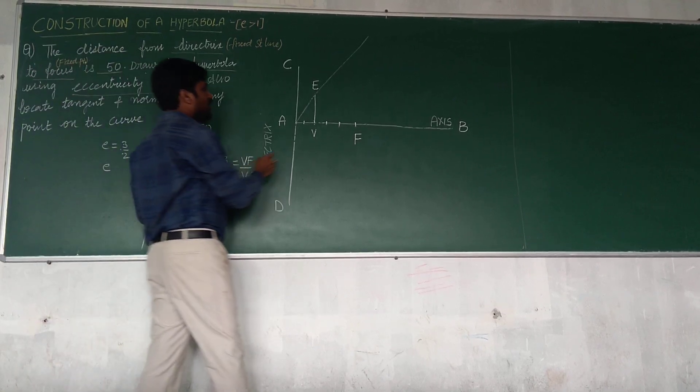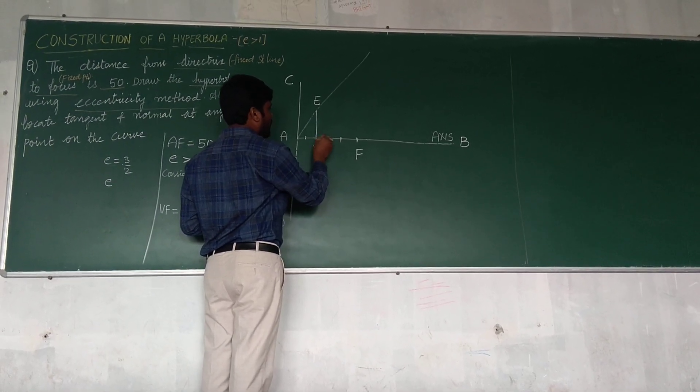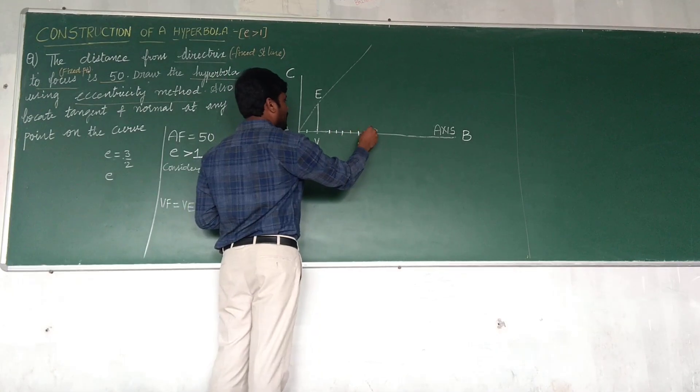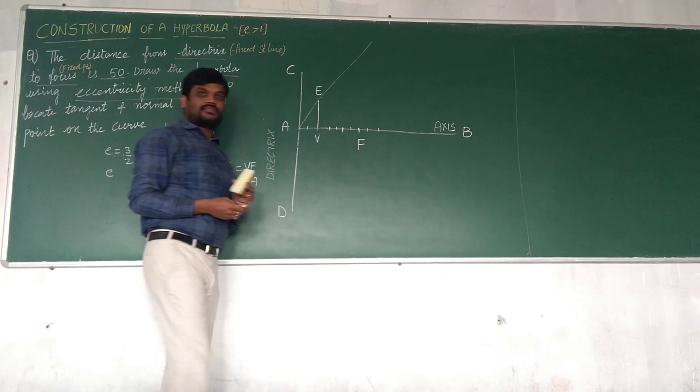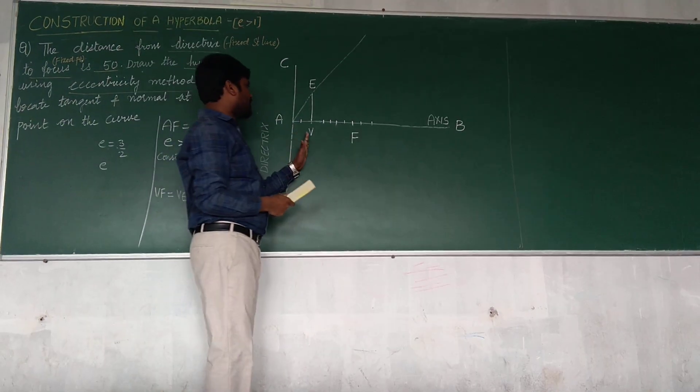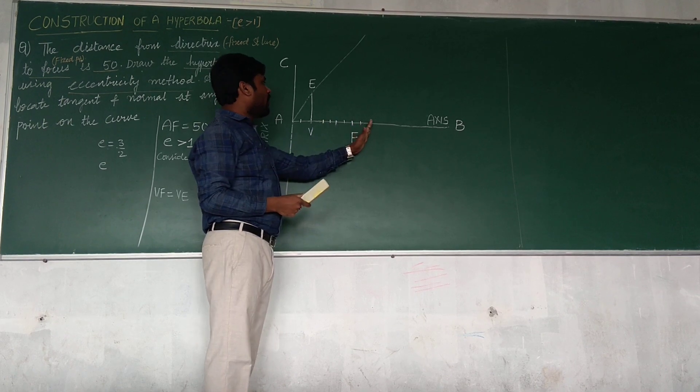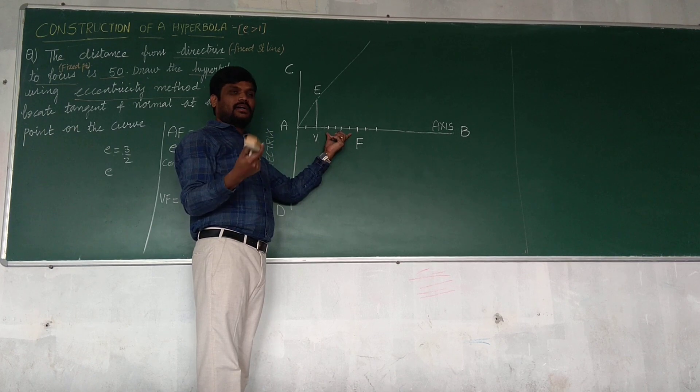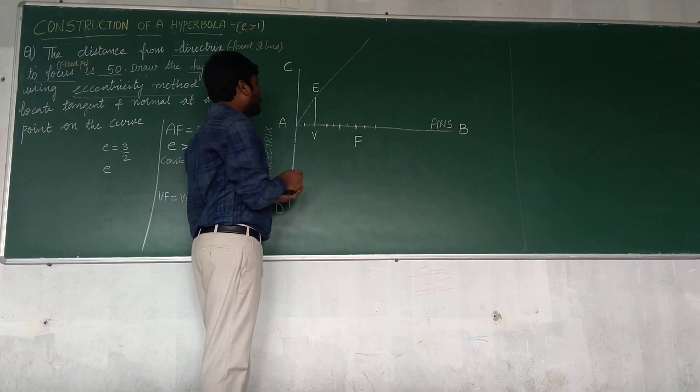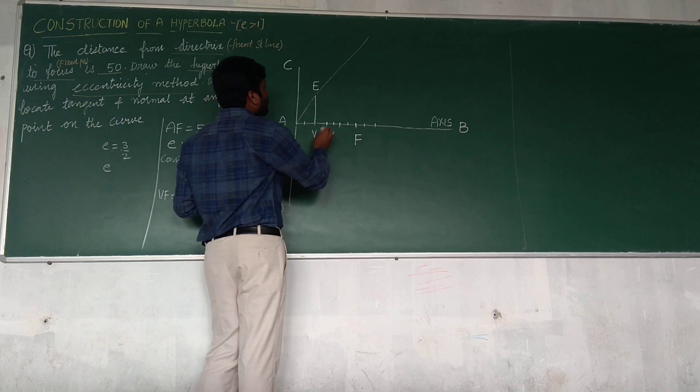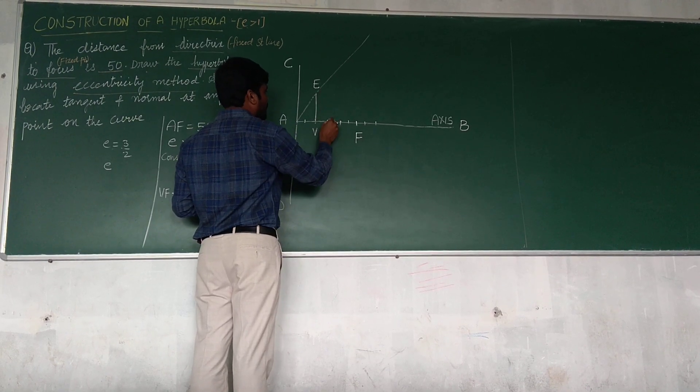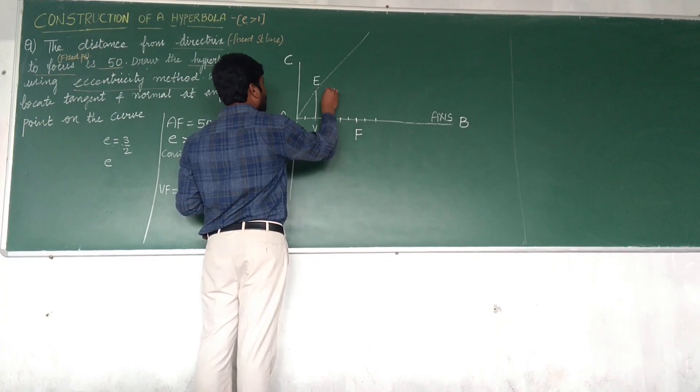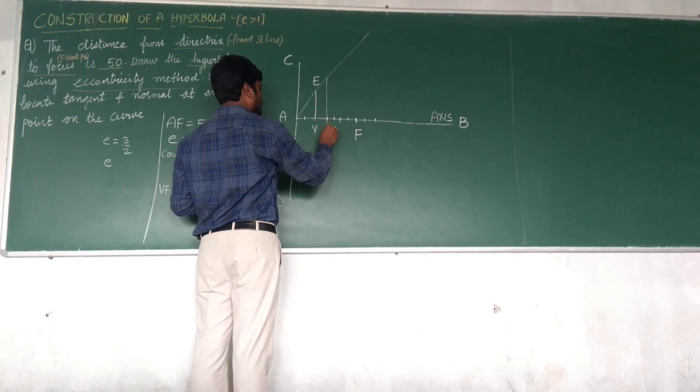Next step, what is the next step? Similar to that of the other problems which we have done, divide number of lines to the axis from V which need not be of equal distance. After the vertex, divide a set of points on the axis which need not be of equal distance. These are purely, we are taking equal distance also.